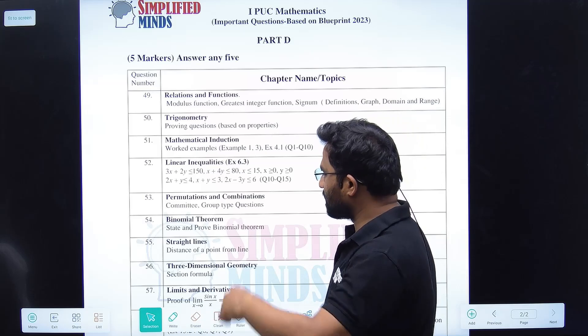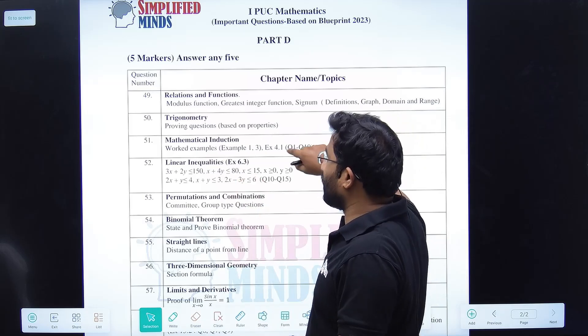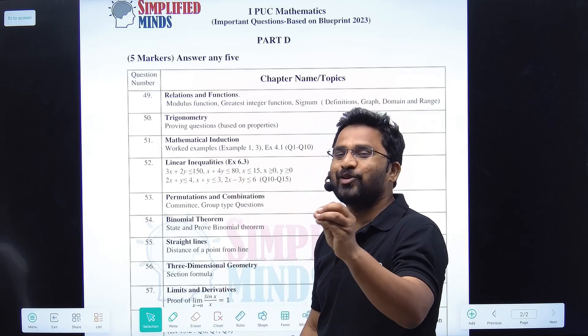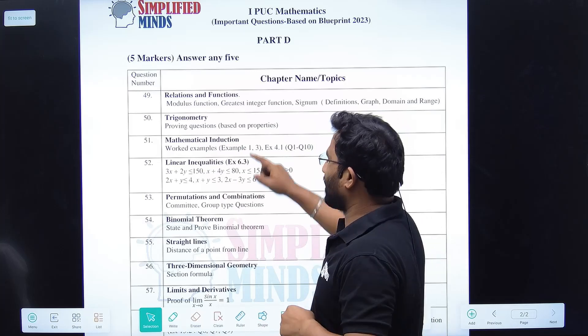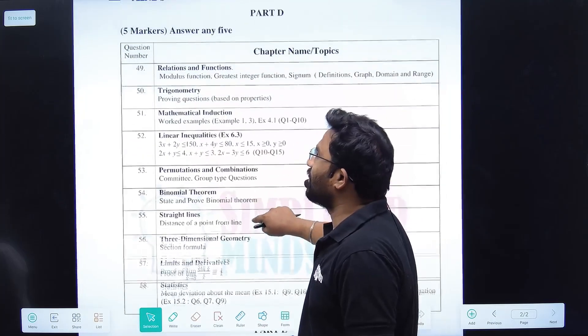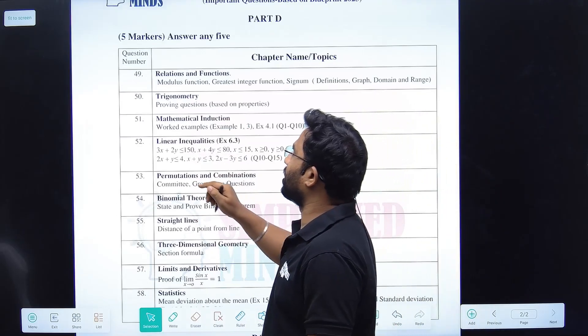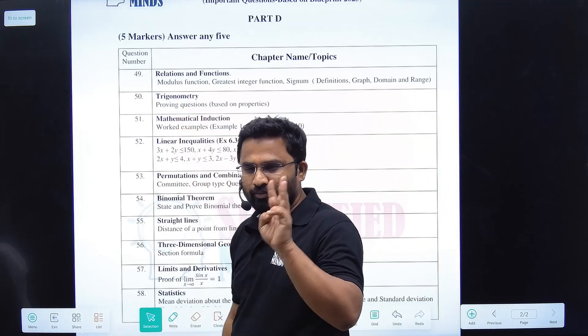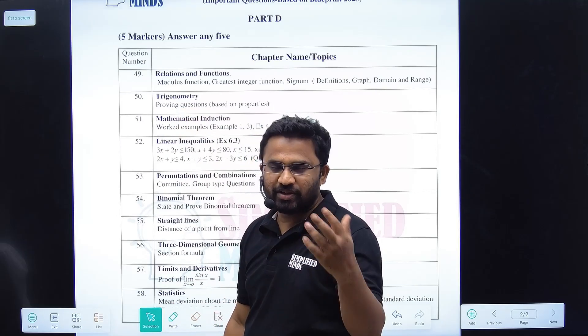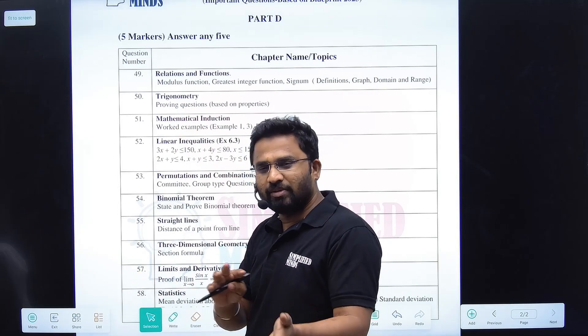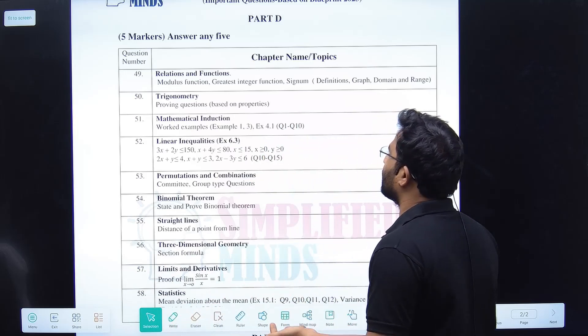Coming to Part D, basically out of any 10 questions you have to answer five questions. I will discuss first one by one question. It's very easy. First is Relations and Functions - derivations, modulus function, greatest integer function, signum function, definitions, graph, domain, range.